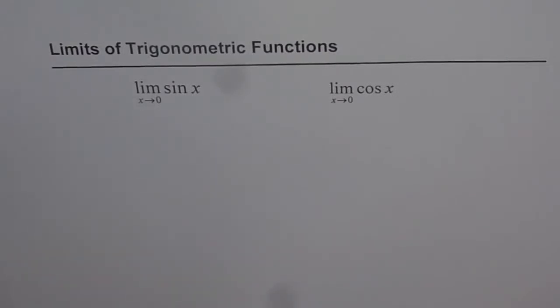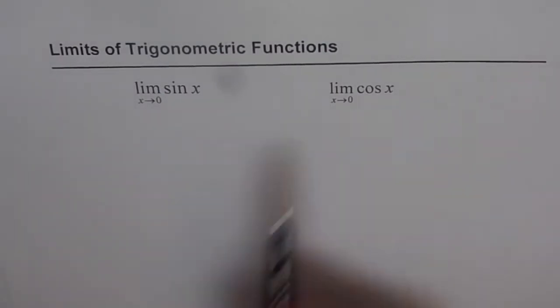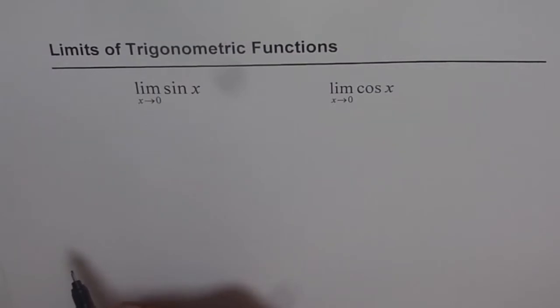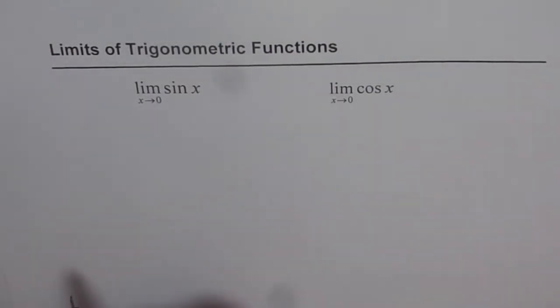Limits of trigonometric functions. We'll start from the very beginning. We are considering two primary trigonometric ratios, sine x and cosine x, and we are trying to find the limit as x approaches 0.